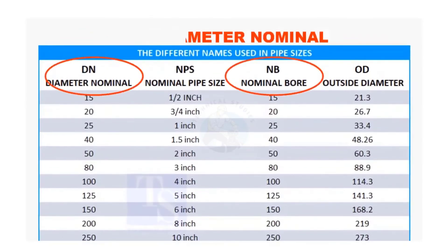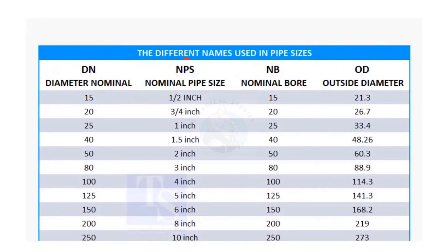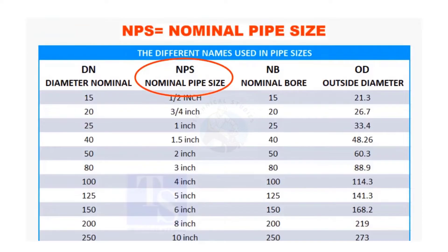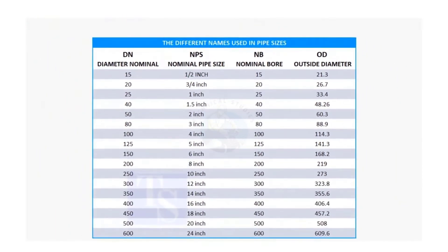DN and NB are the international and European metric methods used to describe NPS. The actual outer diameter, OD, is not the same as DN and NB. These are reference sizes only.